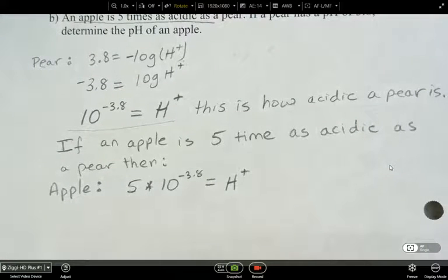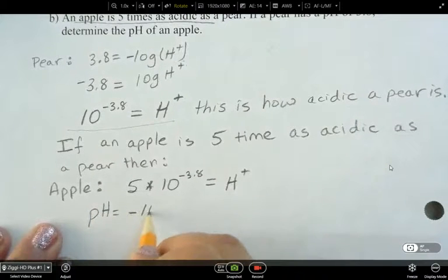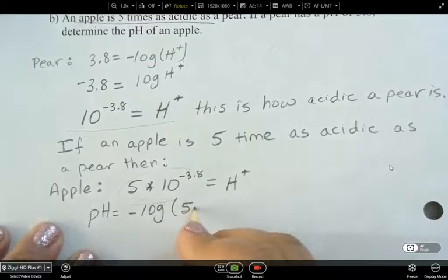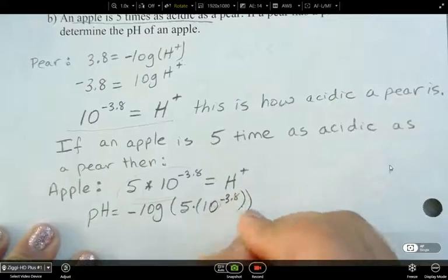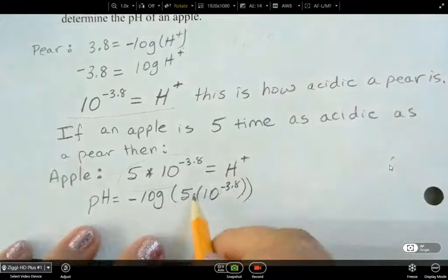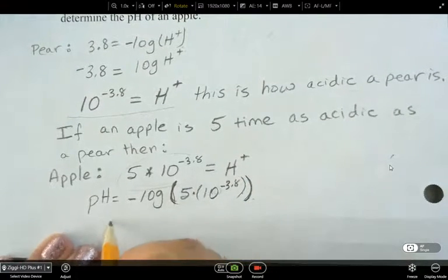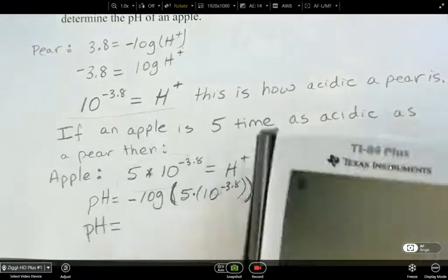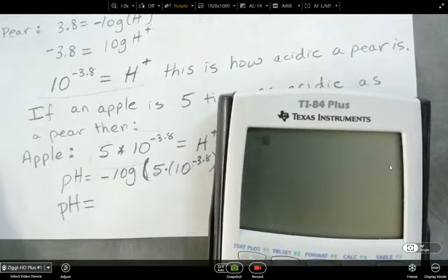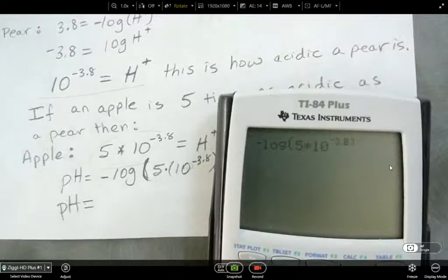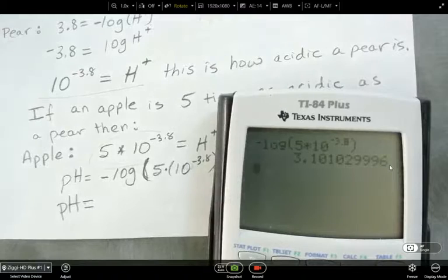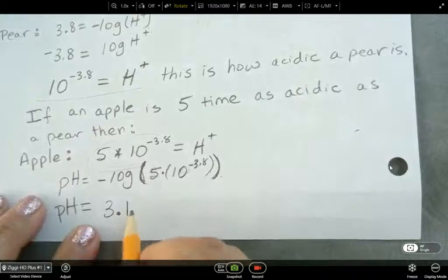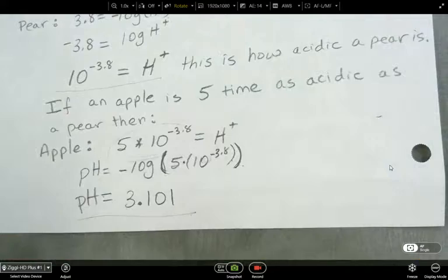Now, let's figure out where it sits on the pH scale. So for pH, I know that it's negative log, and then I take this number for my H plus, five times 10 to the power of negative 3.8. I've got two brackets there just because I wanted to make sure that it was in there. So when we put that into our calculator, negative log five times 10 to the power of negative 3.8, I ended up getting 3.101. So that's where it sits on our pH scale.